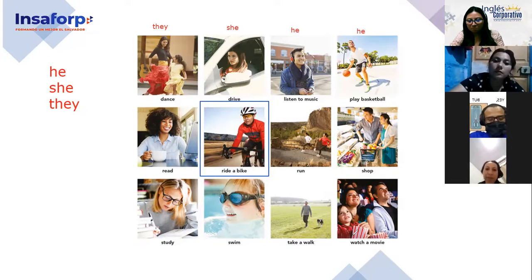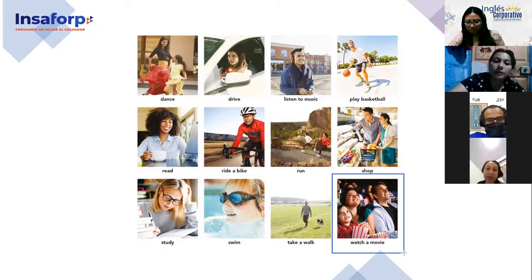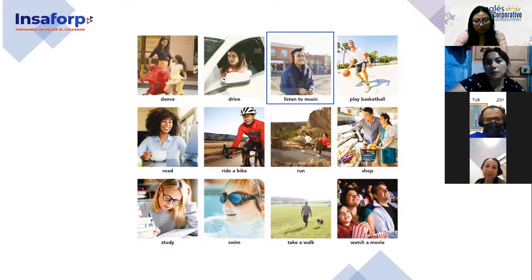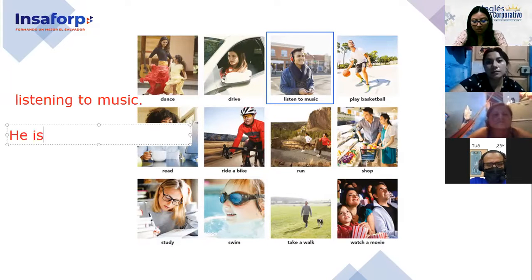Let me pick another picture — this one, the last one. Take a look at this family. Make the question. What are they doing? And what is the answer? They are watching a movie. Class, what is he doing? — He's listening to music. He is listening to music — está incompleta si solo digo 'listening to music.' Necesito sujeto y mi verbo to be. Now it's complete: He's listening to music.